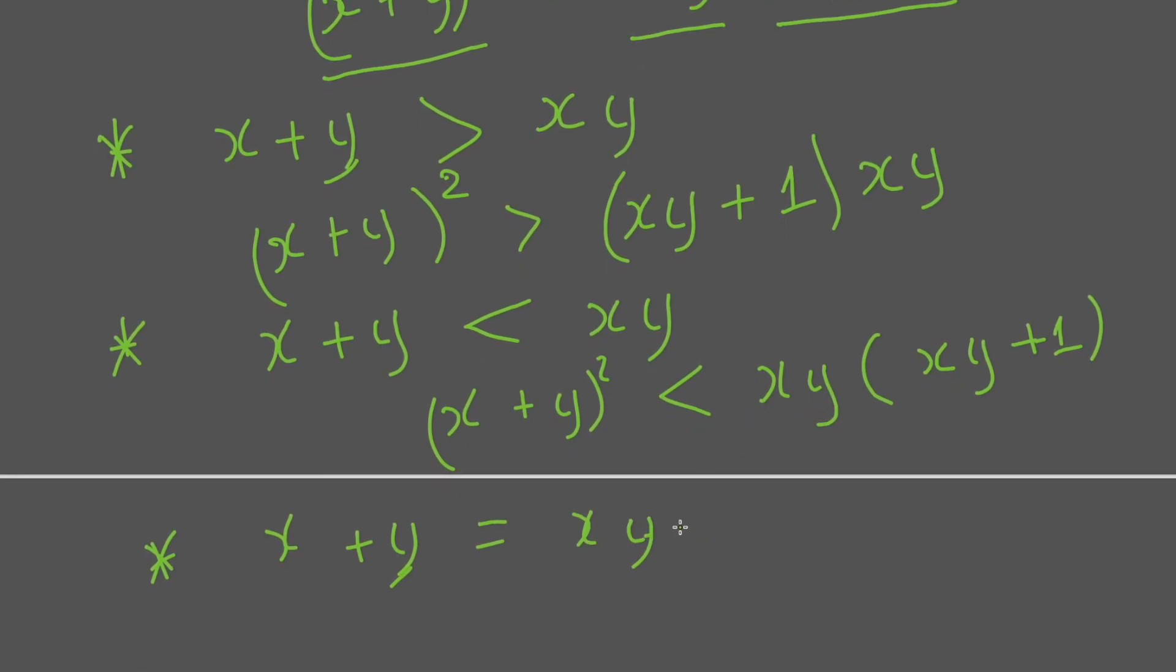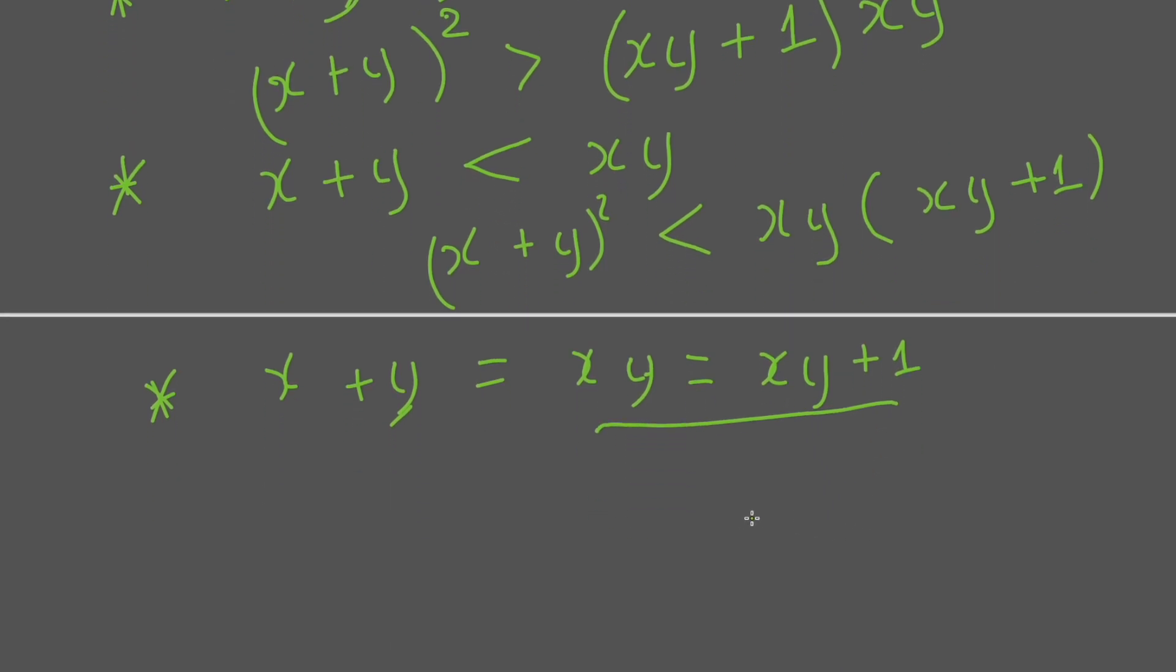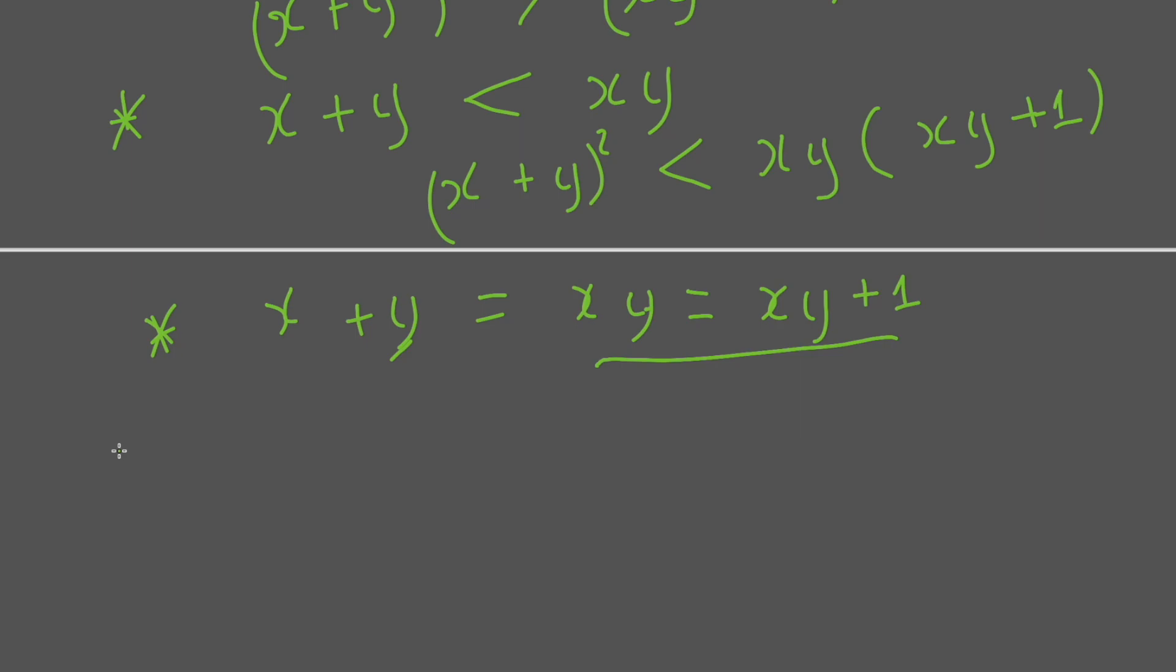Because this means xy will be greater than xy + 1, which is wrong. So then the square number cannot be a product of two consecutive integers.